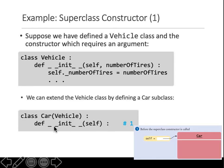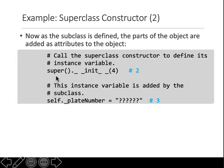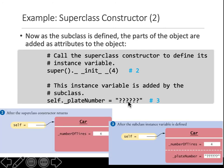Line one inside the subclass constructor is to call the superclass constructor with the necessary parameters. Then you create an instance variable specific to the subclass — meaning this variable is not in the superclass. So in the superclass the numberOfTires variable is set, and in the subclass that variable is also set, plus an additional variable is defined for the subclass.